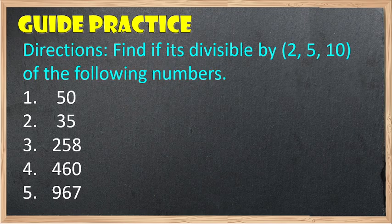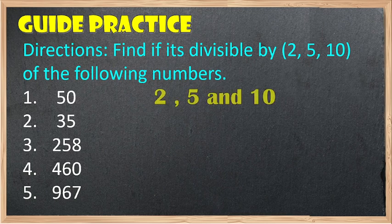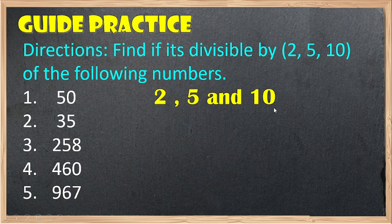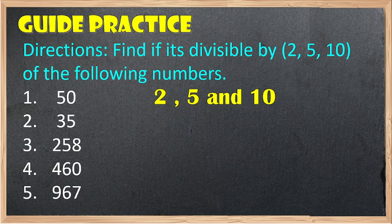Number 1: 50. It is divisible by 2 — yes, because the last digit is even. It is divisible by 5 — yes, because the last digit is 0. It is divisible by 10 — yes, because the last digit is 0. Number 2: 35. Divisible by 2 — no. Divisible by 5 — yes. Divisible by 10 — no. Therefore, the answer is 5 only.